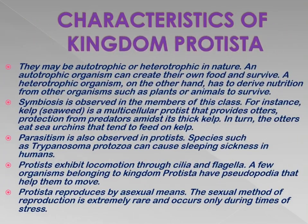These are the second part of the characteristics of Kingdom Protista. They may be autotrophic or heterotrophic in nature. Some organisms placed under Kingdom Protista can prepare their own food, while others cannot and need to depend on other organisms for nutrition. An autotrophic organism can create its own food, while a heterotrophic organism must derive nutrition from other organisms such as plants and animals.